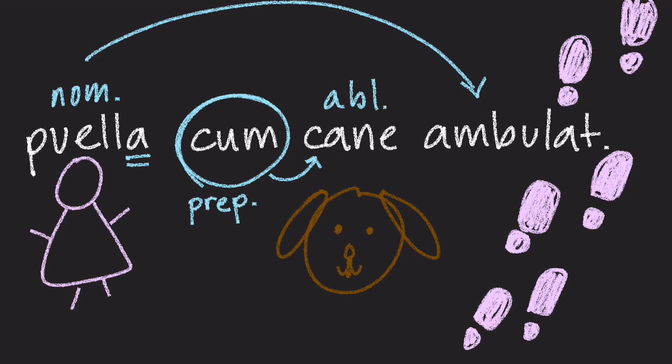Kanem is the ablative form of Kanes. The ablative form has a few different functions, but one of them is that it works with certain prepositions — a word that shows the relationship between two nouns, like on, in, by, or with. In this case, Kum means 'with,' and Kum always works with the word in the ablative case. So if you want to say that the girl is with the dog, we need the word Kum and dog in the ablative: Kum Kane. So Puella Kum Kane Ambulat means the girl is walking with the dog.